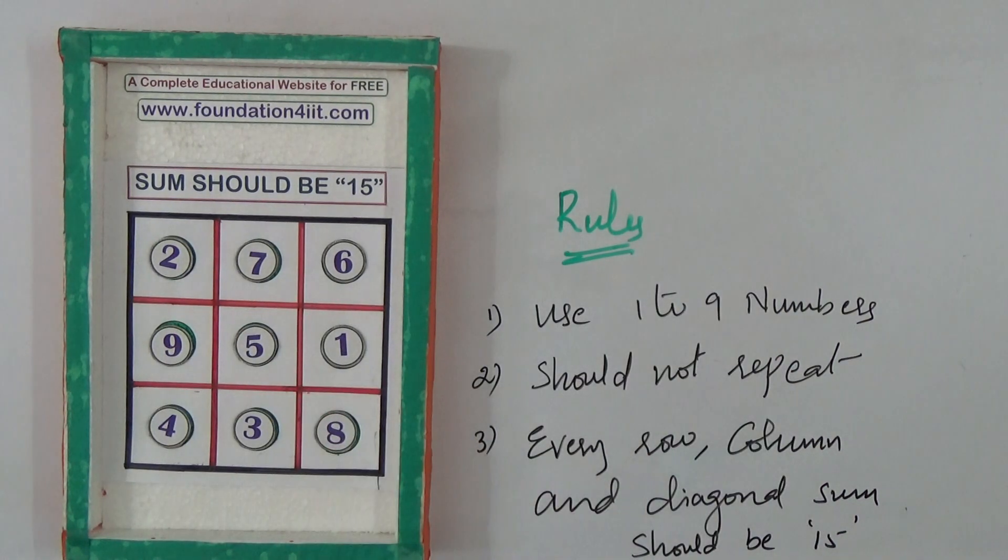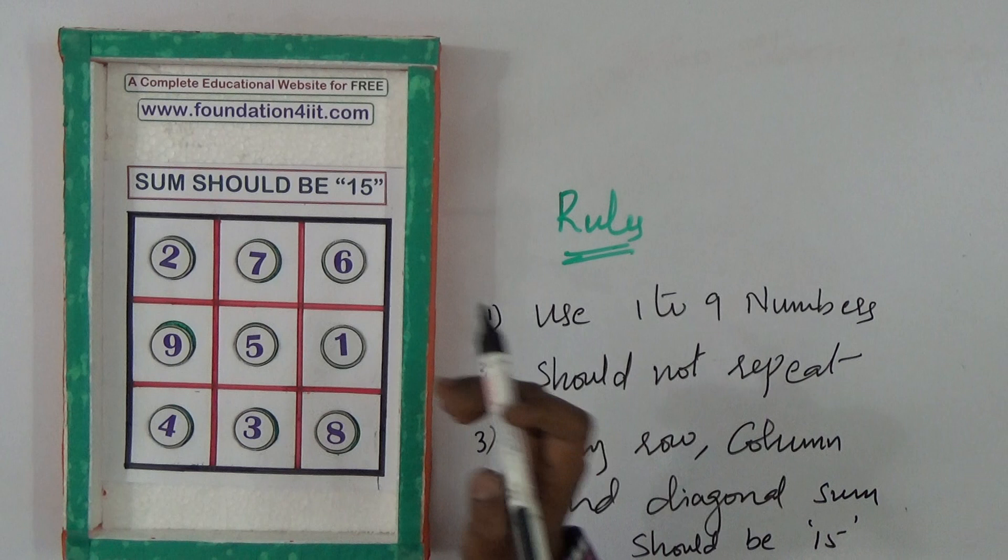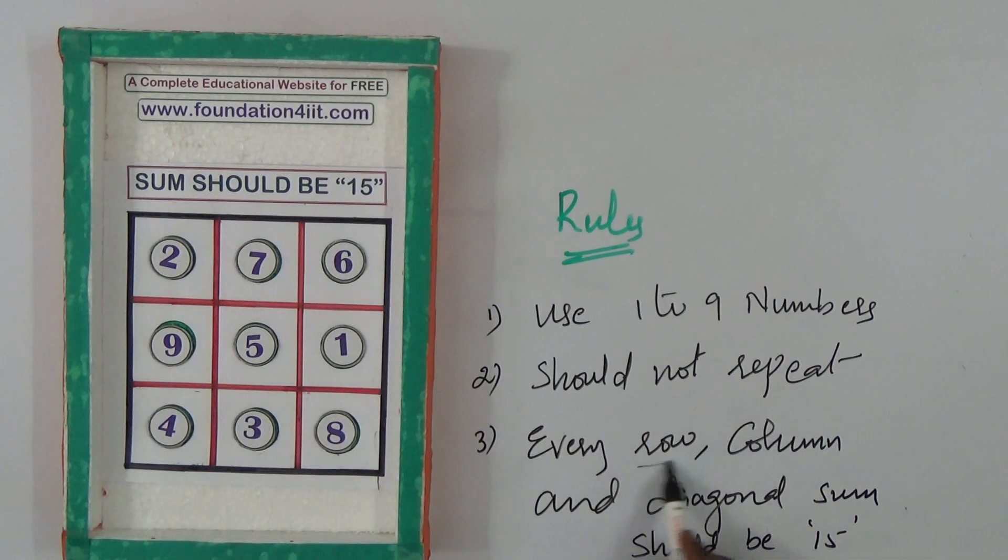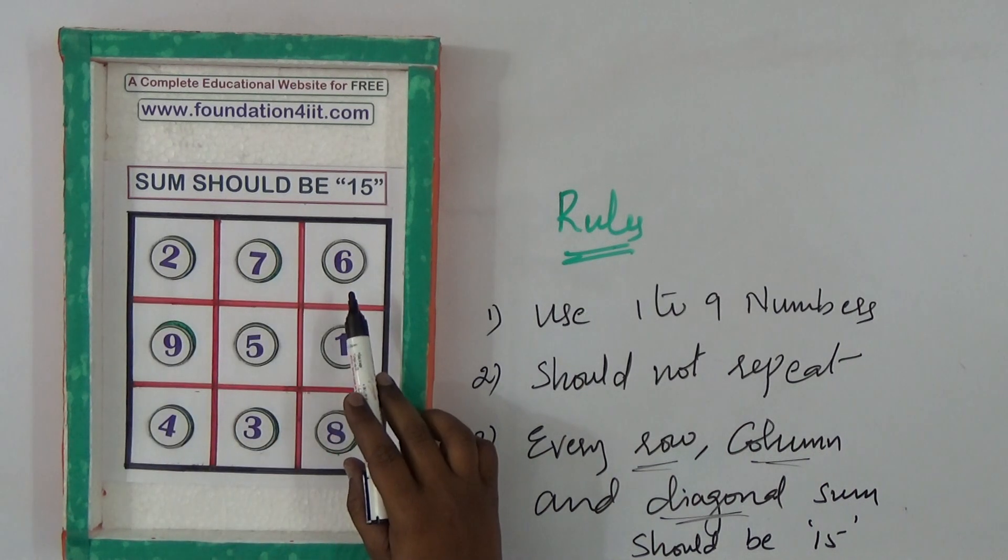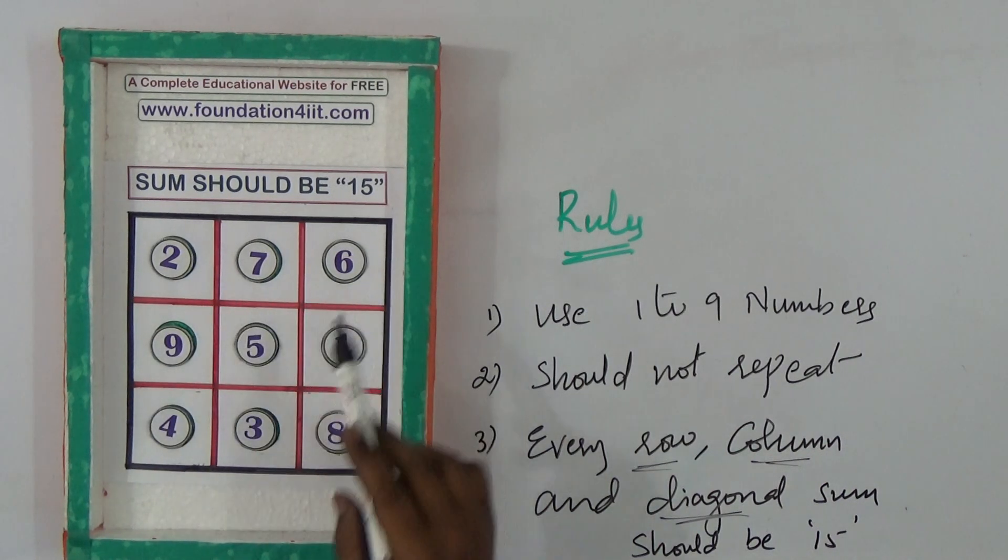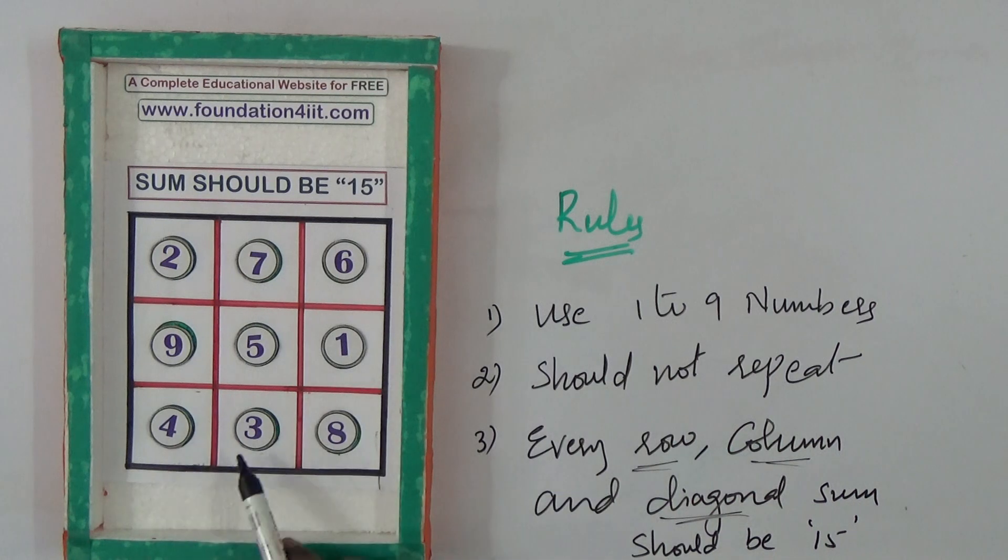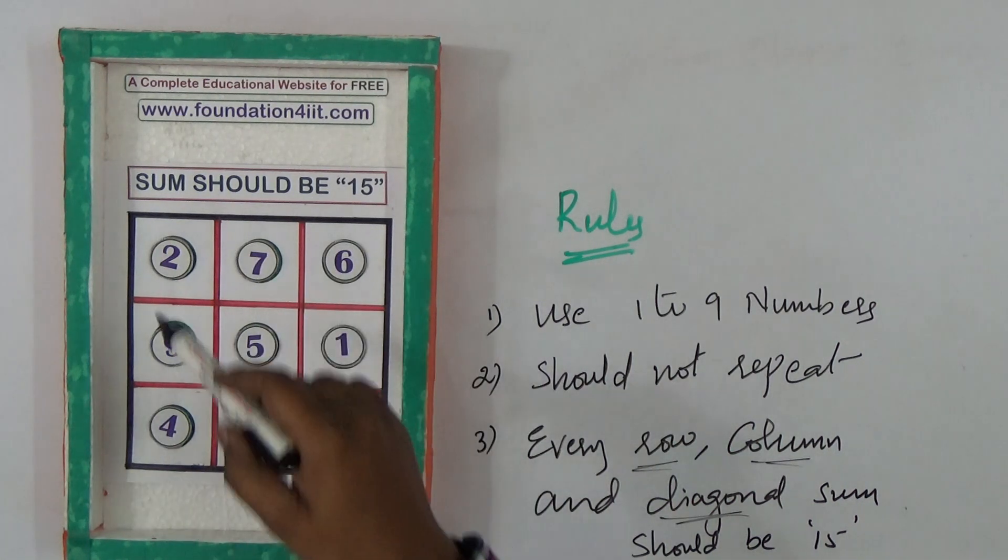And 6, 1, 8 also is 15. Every row, column, and diagonal. These three rules: 2, 7, 6, sum of 2 plus 7 plus 6 is 15. 9, 5, 1. 4, 3, 8. And every column and diagonal as well as this diagonal.